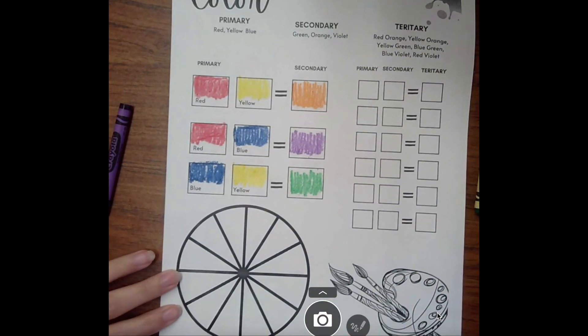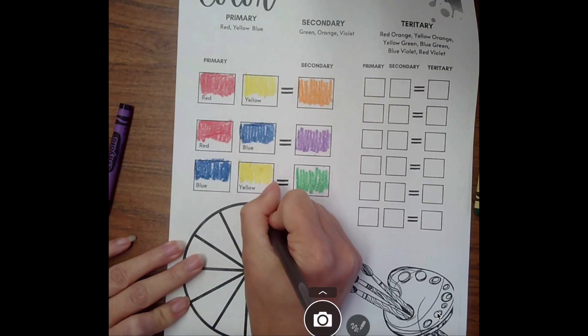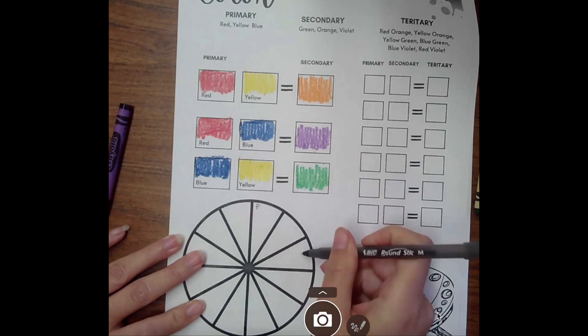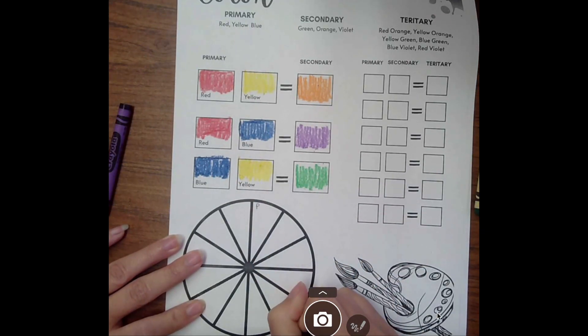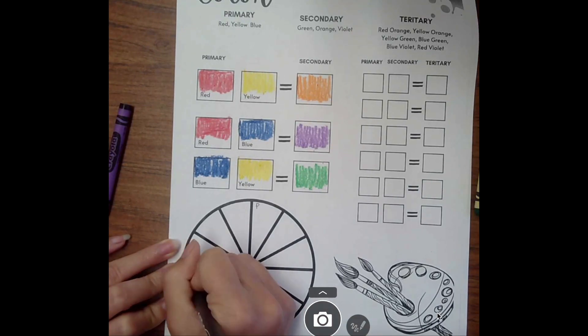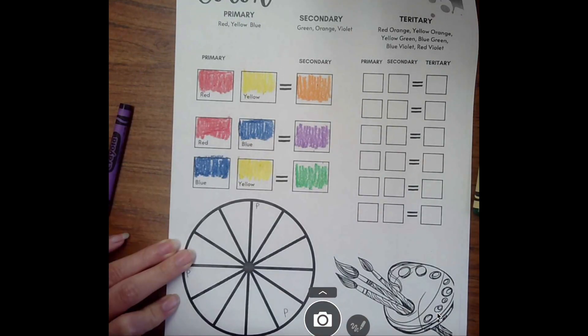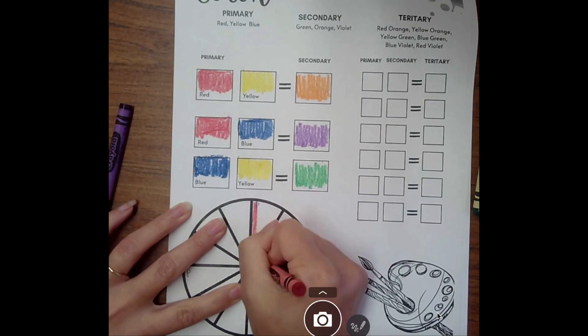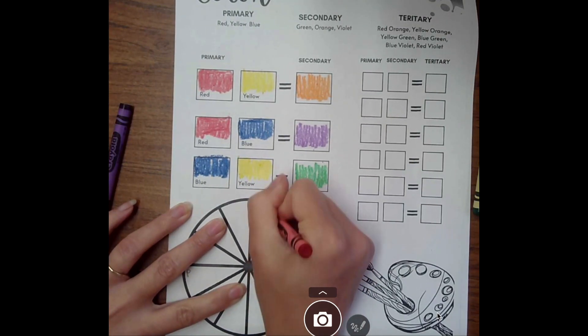Now I'm going down to the circle where I'm going to make a color wheel. I'm going to start with my primary colors. Pick a section to begin with and I'm writing the letter P there. Then count one, two, three, four and write the letter P. One, two, three, four—write the letter P. All of those are going to be your primary colors.